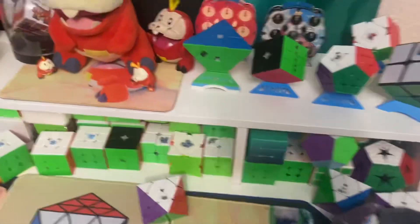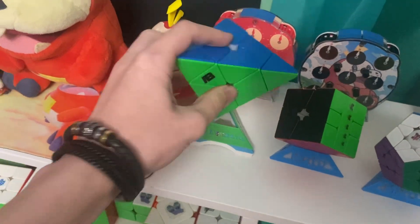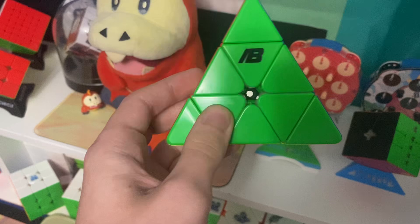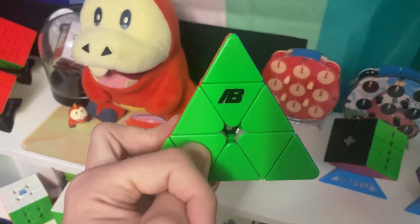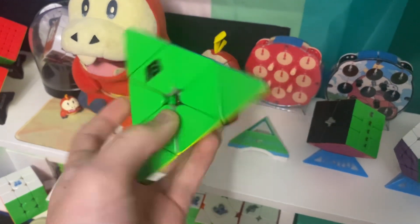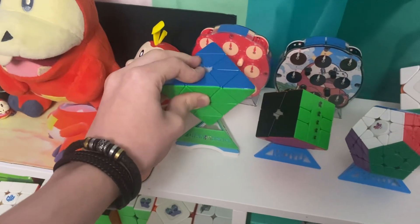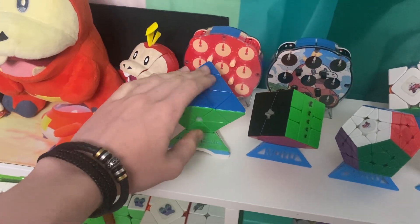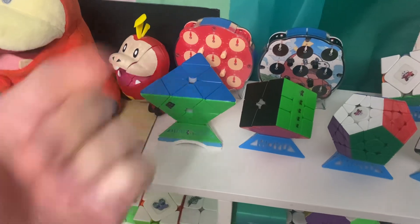Alright, side events. For Pyraminx, I'm going to be using the slash B. Sub-3 average, sub-2 single. Those have been my goals for a year now, since Nats 2023. And they would both be state records, so get a state record in Pyraminx.